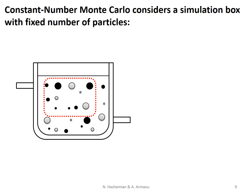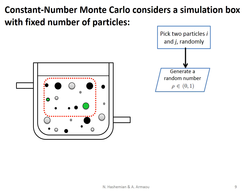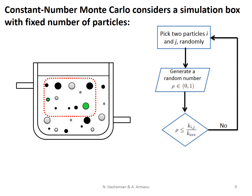One way to solve this integral differential equation in time is constant number Monte Carlo simulation. In this method, there should always be a constant number of particles in the simulation box. At every sampling time, we randomly pick two particles. Then we generate a random number. The ratio of the corresponding kernel to the average value for kernels shows the agglomeration probability of the selected pair. When rho is bigger than this ratio, the pair is rejected and the random pair selection is repeated. Otherwise, the pair is accepted to form a bigger particle.